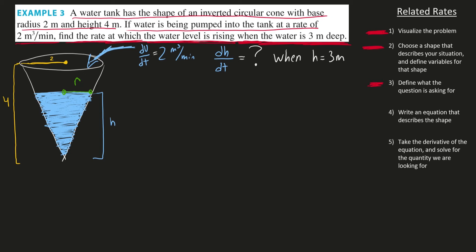We've already chosen our shape and defined our variables — h and r — and we want to know how fast that height is increasing with time at the instant the water level height is 3 meters. So let's do the math. The equation that incorporates what we've gathered is the volume equation of a cone: V = (1/3)πr²h. Now we're going to take the derivative of this equation with respect to time, since we've got dV/dt and dh/dt in the mix.